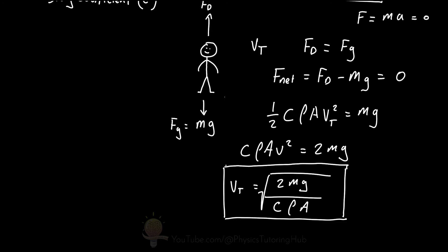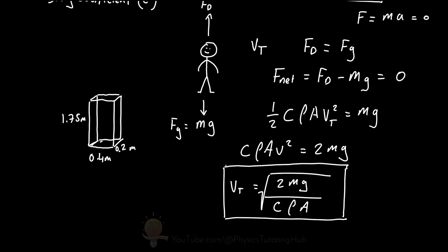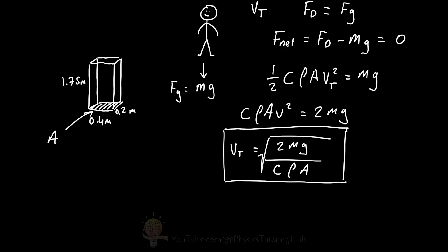This gives us the equation for terminal velocity for any large object moving through air. Since the skydiver is falling feet first, we can approximate them as a rectangular box of approximately 1.75 metres tall by 0.4 metres wide and 0.2 metres in depth. The area we need is the area perpendicular to the direction of motion, which is the cross-sectional area facing downward.